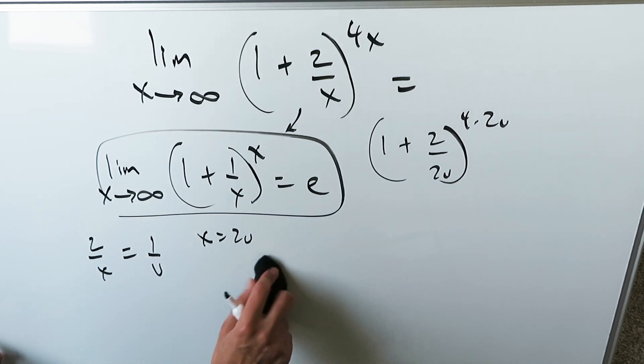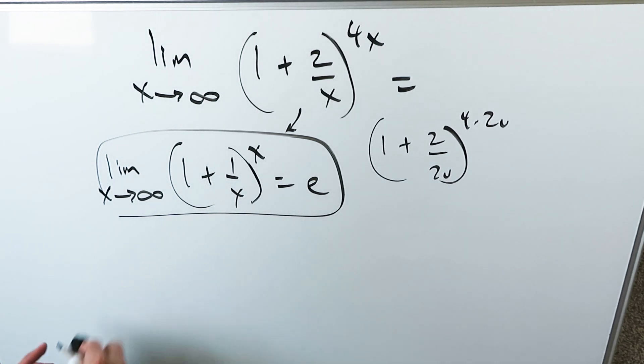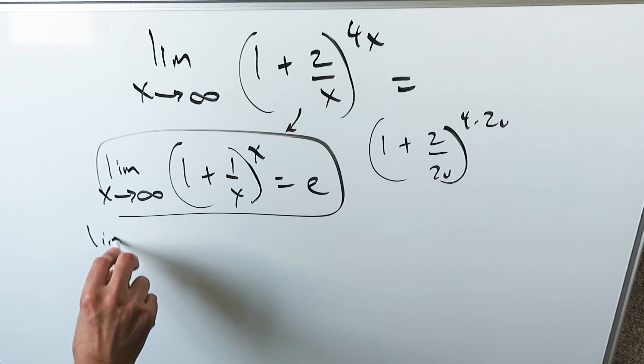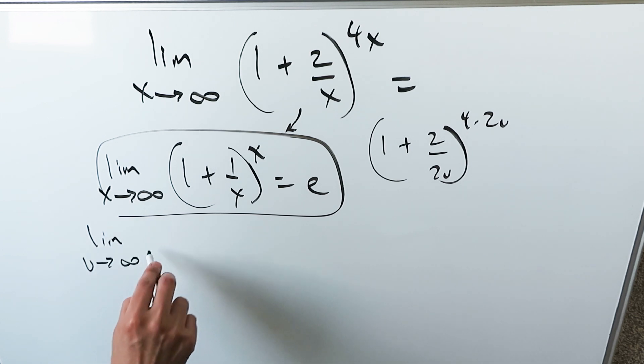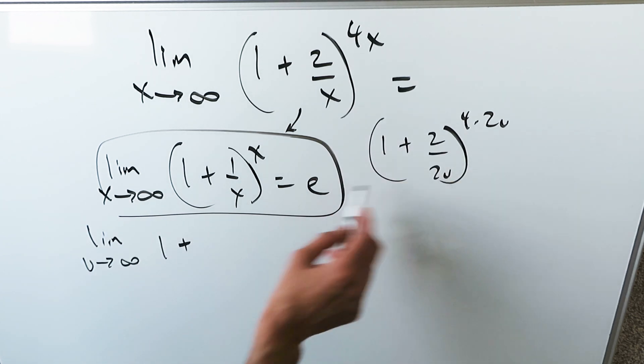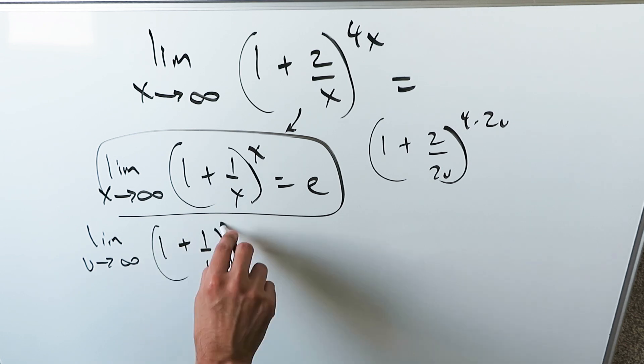You've seen the substitution, x equals 2u, but it means that what I showed you, now bring in your limit. It'll become limit as u approaches infinity. I'm looking at 1 plus the 2s cancel out. I have 1 over u, 4 times 2.